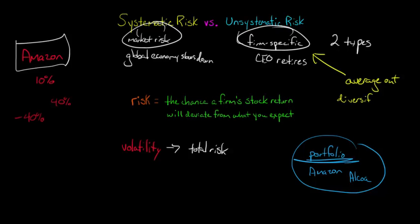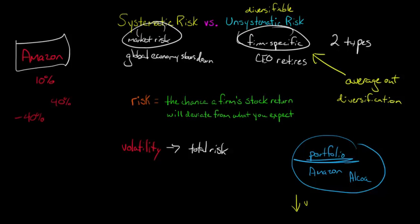Because of this diversification — because we can diversify away firm-specific risks by holding a portfolio of firms instead of just one firm — we can also call unsystematic risk diversifiable risk. You might hear it called diversifiable risk, firm-specific risk, or unsystematic risk; they all refer to the same concept. As you increase the number of firms in a portfolio, the portfolio's volatility is going to decrease. We'll talk more about that later.